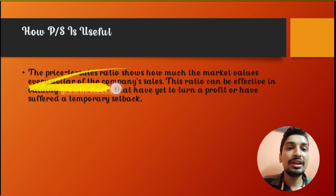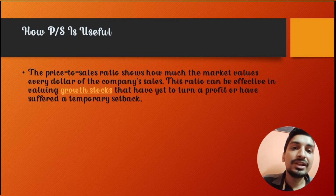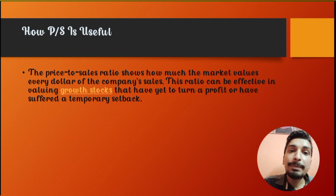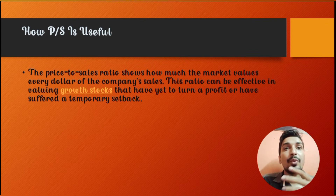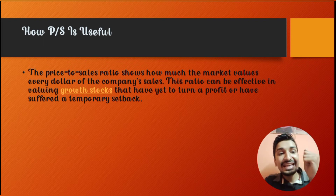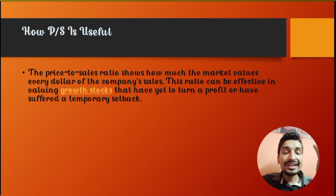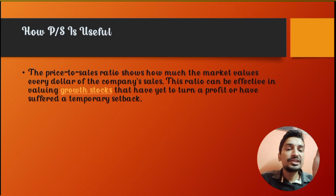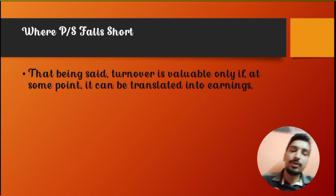The price to sales ratio shows how much the market values every rupee of the company's sales. This ratio is effective for valuing growth stocks that have yet to turn a profit or have suffered temporary setbacks. A company may not be making much profit currently — perhaps selling products cheaply to advertise or market itself — but high sales indicate the company is strong and can become profitable in the future.